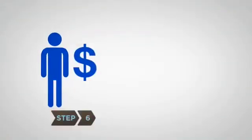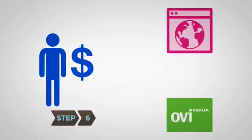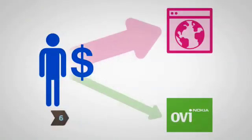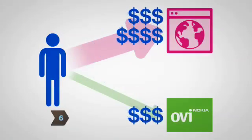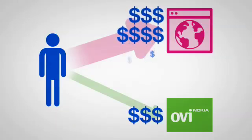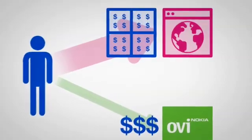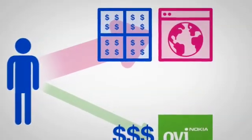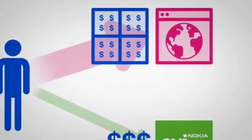Step 6. Make money. Developers receive 70 percent of the end-user's payment, less any taxes and fixed operator billing charges. You will be paid on a quarterly basis. See terms and conditions for details.